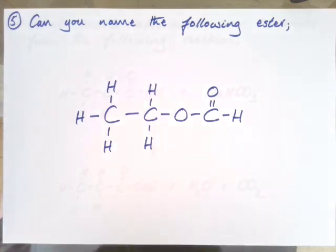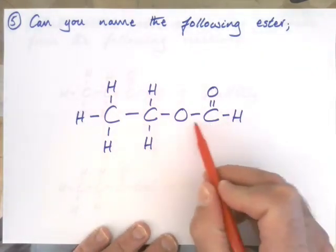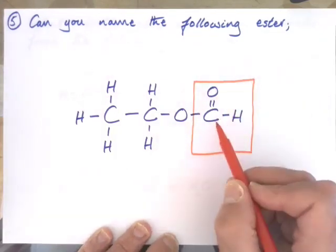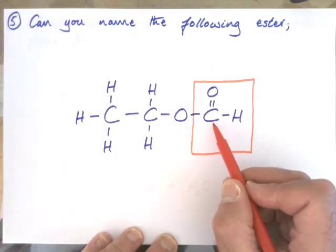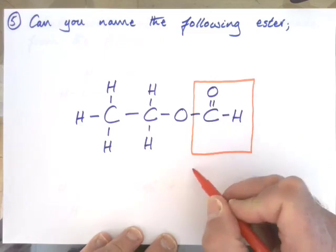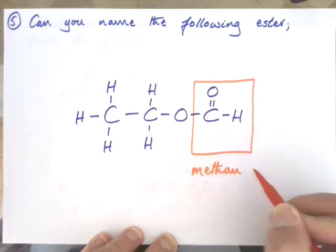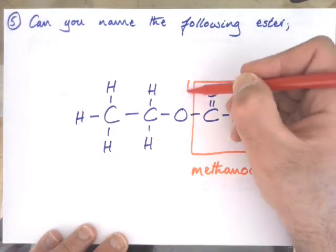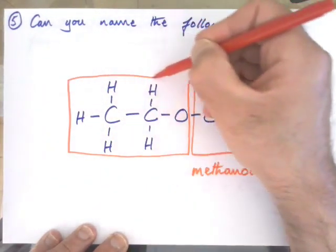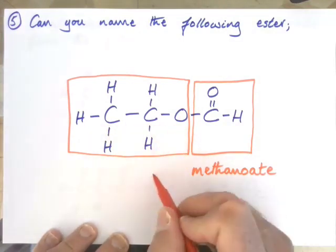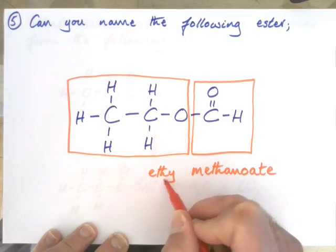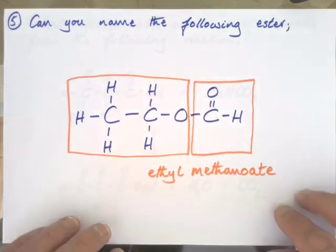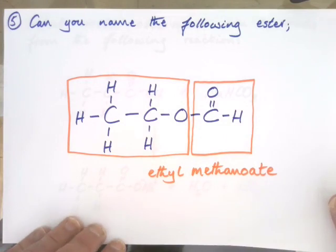Esters are made from alcohols and carboxylic acids. This part — with the double bond oxygen — comes from the carboxylic acid side. It has one carbon, so it must have come from methanoic acid, giving us methanoate. The other part is the alcohol section, and that must have come from ethanol — so it's named ethyl. Therefore the ester is ethyl methanoate. Esters can be quite tricky to name, but you won't be asked anything too complicated.